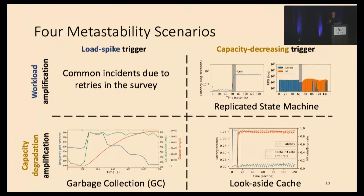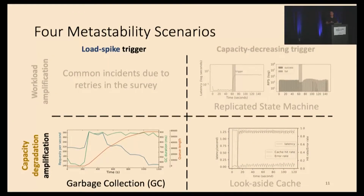On the bottom left, we have a load spike trigger that introduces more garbage collections, which serves as capacity degradation amplification. We found this metastability due to garbage collection originally at Twitter, then reproduced it in a controlled environment. Let's take a closer look at the sustaining effect of this event.